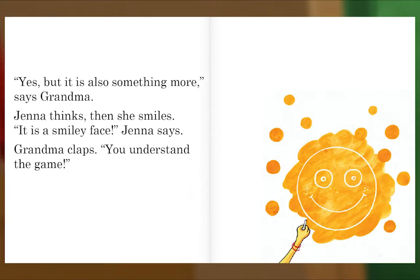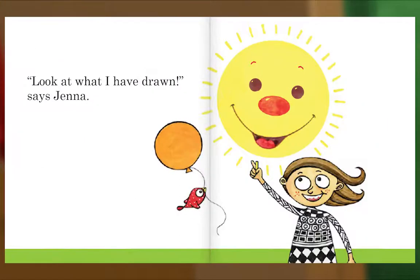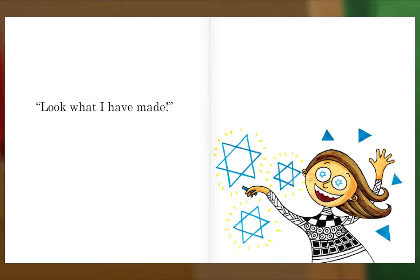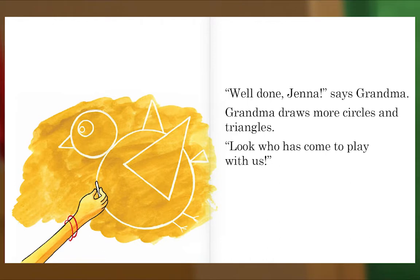Yes, but it is also something more, says grandma. Jenna thinks, then she smiles. It is a smiley face, Jenna says. Grandma claps — you understand the game! Look at what I have drawn. Grandma draws another shape — a triangle, Jenna shouts. Then she laughs. Look what I have made! Well done, Jenna, says grandma. Grandma draws more circles and triangles — look who has come to play with us.